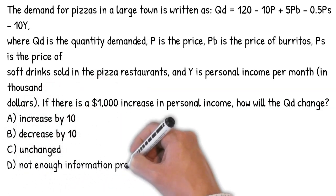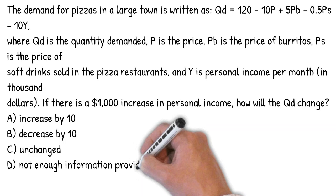According to the demand function, as income increases by 1 unit, quantity demanded decreases by 10 units. The income elasticity of demand is negative, so the good is not a normal good — it's an inferior good.